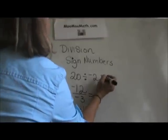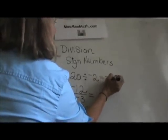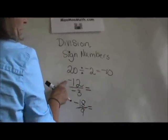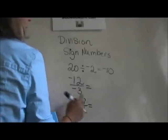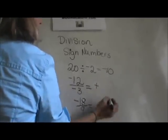20 divided by negative 2, and the answer is negative 10. Negative 12 divided by negative 3, and the answer is positive 4.